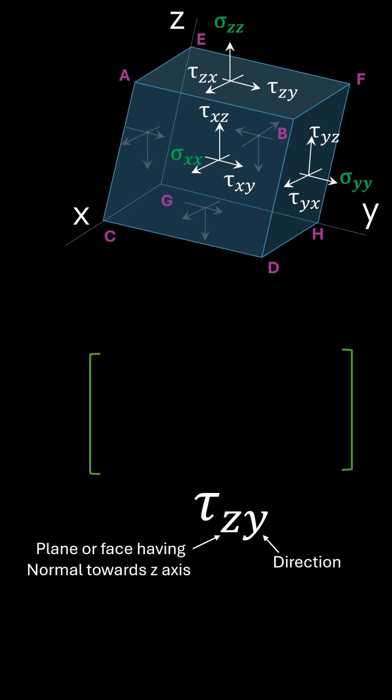The stress components acting on the cube can be represented in a three-by-three matrix, forming the stress tensor. Since stress has two indices, it is classified as a second-order tensor.